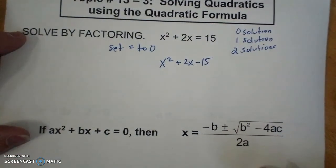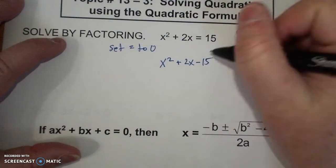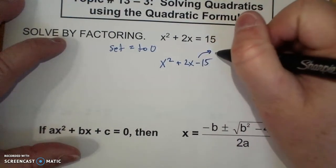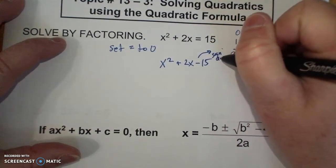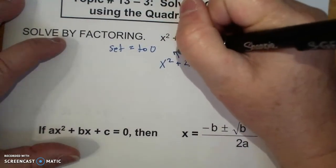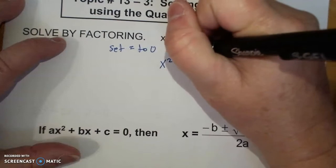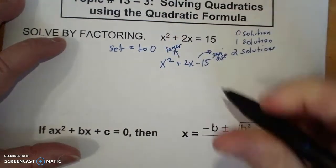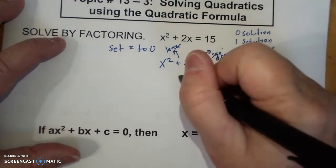Solve by factoring, which is what we've been doing. The signs are different. This is a coefficient of 1. This means the larger one, sign of larger. So I have 5 and 3, so plus 5 and minus 3.